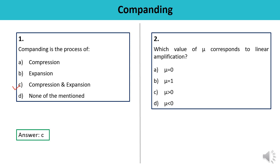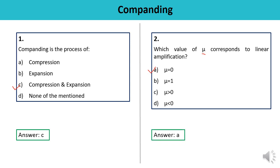Question number two: Which value of Mu corresponds to linear amplification? Linear amplification, also known as uniform quantization, corresponds to Mu equal to zero. The answer is A.